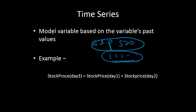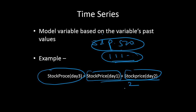To define time series: it is a technique in which a model variable is forecasted on the basis of its past values. For example, the stock price of day 3 can be modeled as the average of stock price of day 1 and day 2 — that would be a very simple time series model. There is only one variable involved, which is stock price, and that same variable is used for its own forecasting.